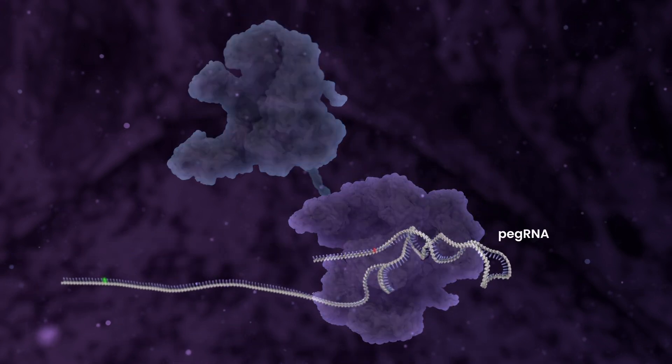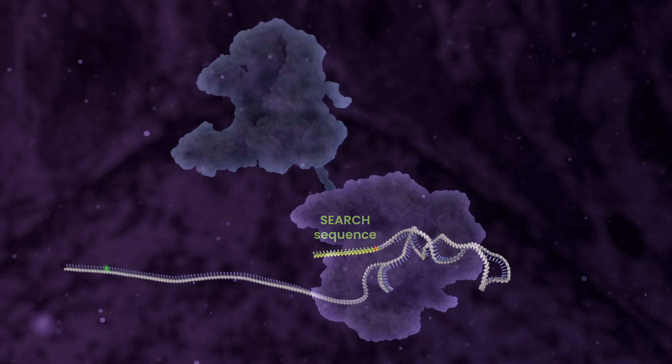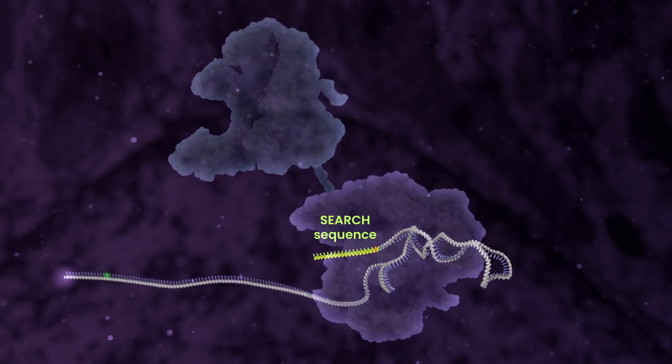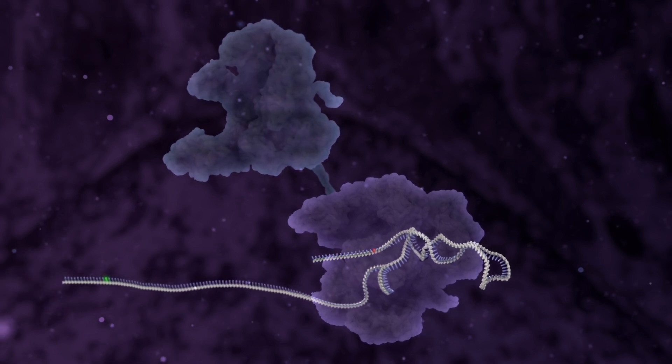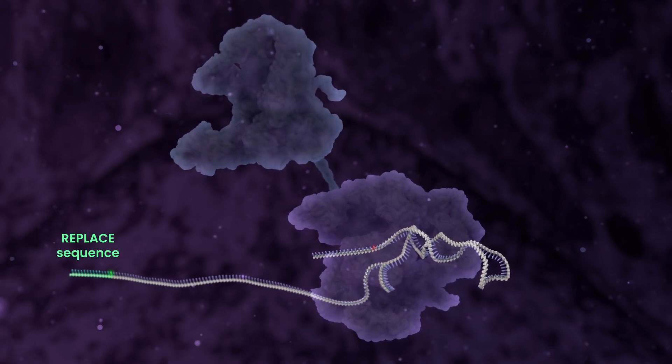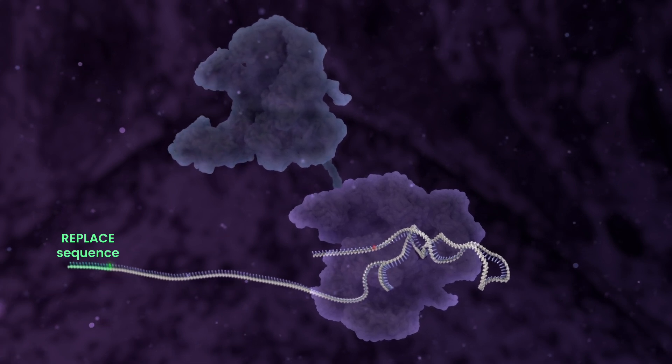The PEG RNA has two important sequence components: a search sequence that allows the cas enzyme to find the mutated gene sequence, and a replace sequence that provides the instructions for correcting the mutated DNA.